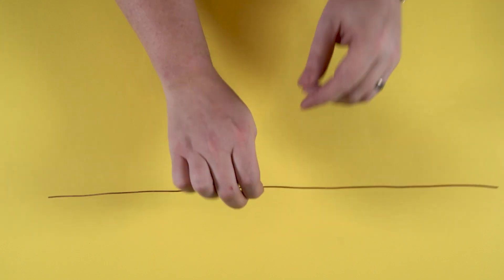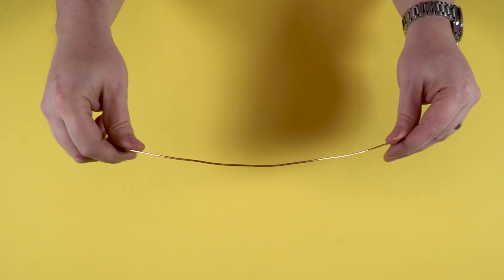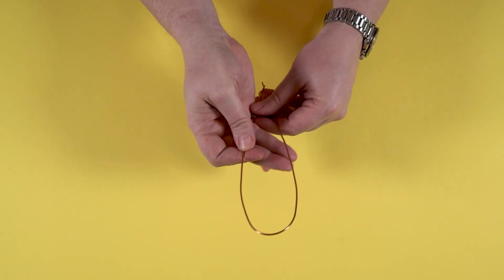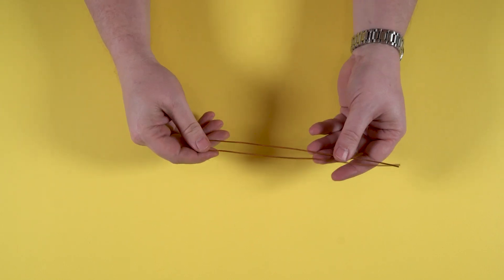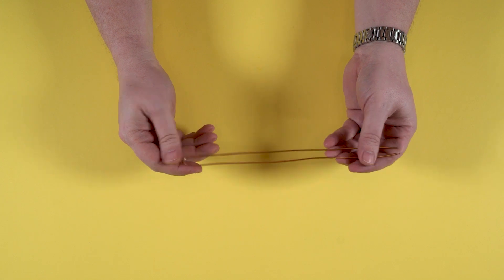So the first thing I'm going to do is I'm going to take my wire and I'm going to bend it so that the two ends come together so that I can find the middle. And the whole time I do this, it's really going to work out better in the end if you try to keep everything as flat and straight as possible.